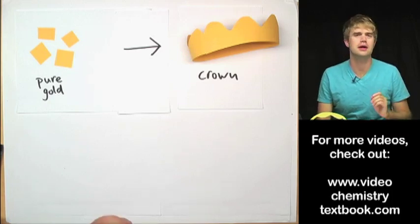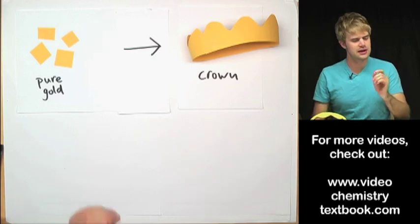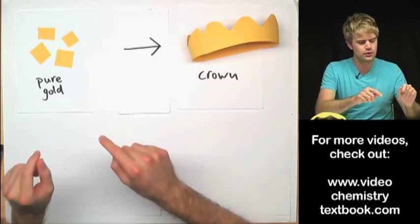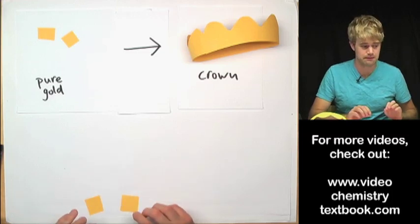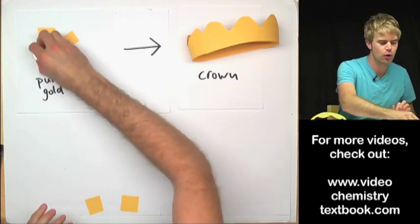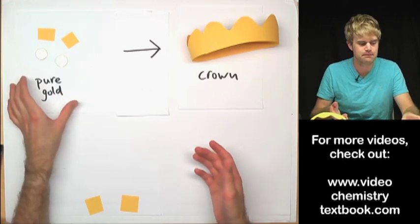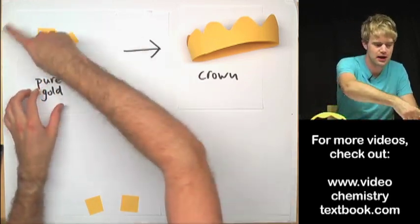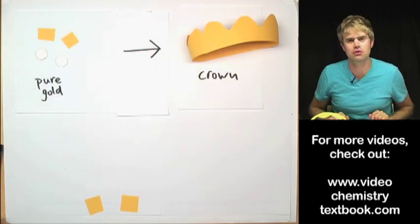And here is what the king thinks the goldsmith might have done. The king is worried that the goldsmith took some of the gold for himself and he kept it. And then he replaced the gold with a cheaper metal, say like silver. And then took the gold and silver and melted it down, stirred it together, and used that to make the crown.